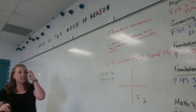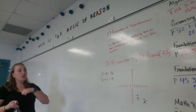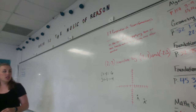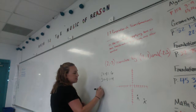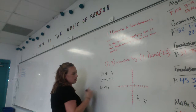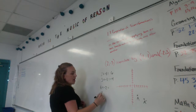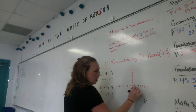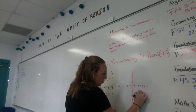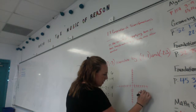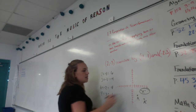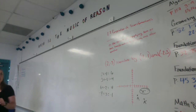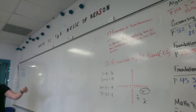Now from there, I'm not done. I still have to do another translation of (-2, 3). So I take 6 and add -2 to get 4, and I take -4 and add 3 to get -1. So my final point is (4, -1). That is the composition transformation that happened through translation.